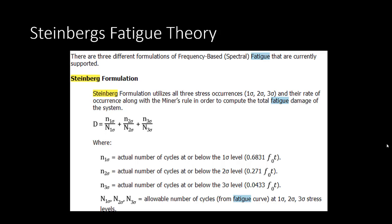In order to determine the fatigue life of the part we'll be using Steinberg's formulation, which is the default setting in ANSYS Mechanical. Steinberg's formulation uses all three stress occurrences — sigma 1, sigma 2, and sigma 3 — and the rate of occurrence, along with the very popular and common Miner's rule in order to compute the total fatigue damage of the system.